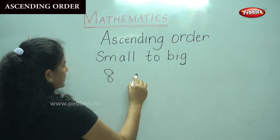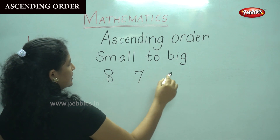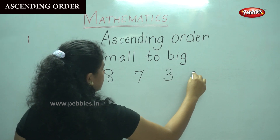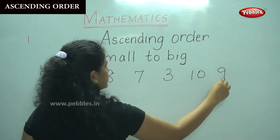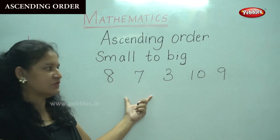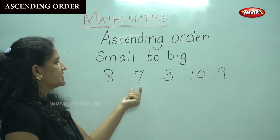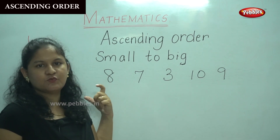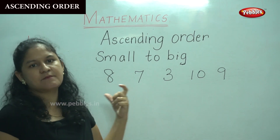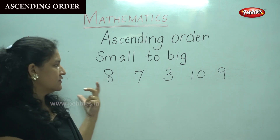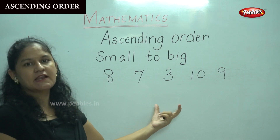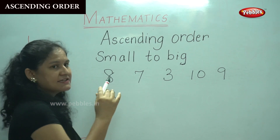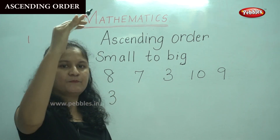So we have numbers 8, 7, 3, 10, and 9. I have 5 numbers. I am going to find which is the smallest number among these 5. The smallest number is 3. So I write number 3. We are doing ascending order, that is from small to big.